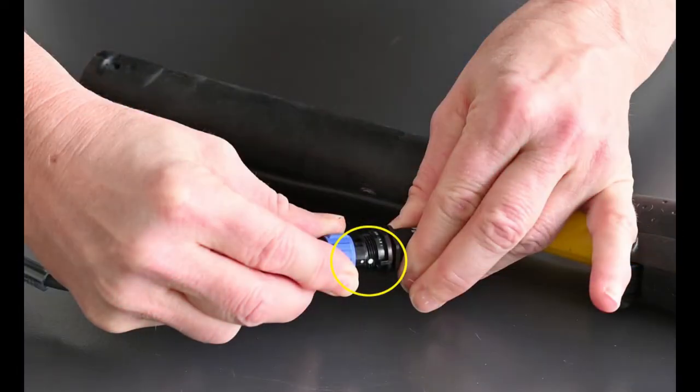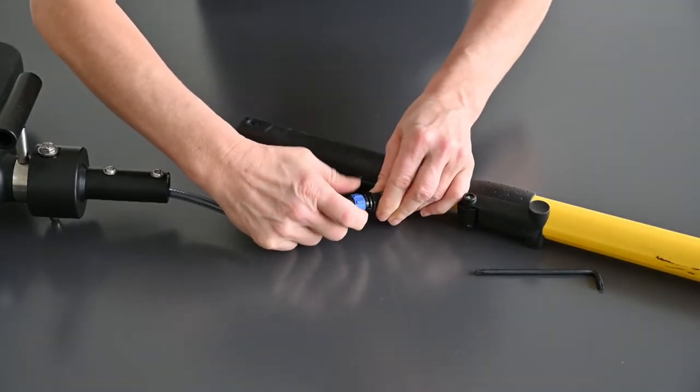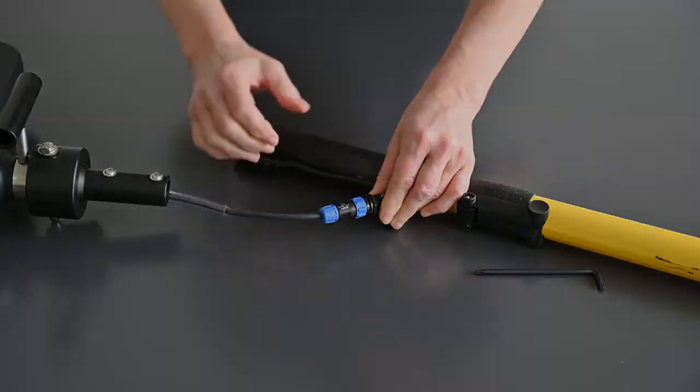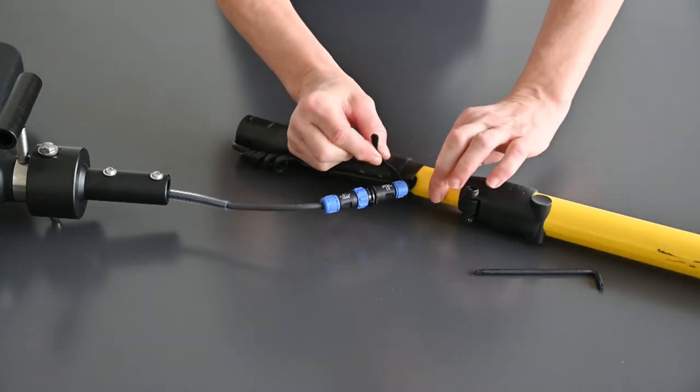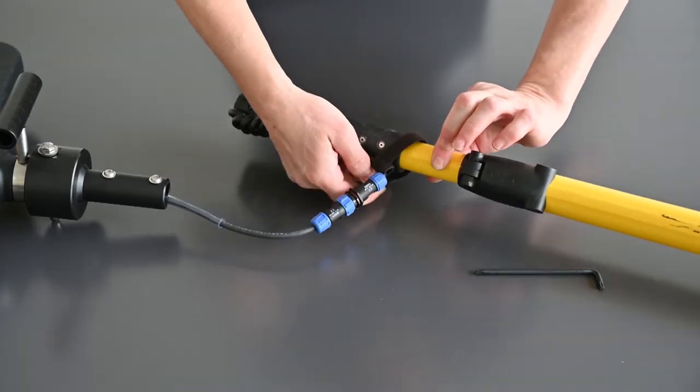Make sure that the white dots of the two plug connections are on top of each other. Now tighten the screw connection firmly by hand to prevent water ingress. Never use a tool such as pliers for this. Remove the Velcro and route the cable into the pole.